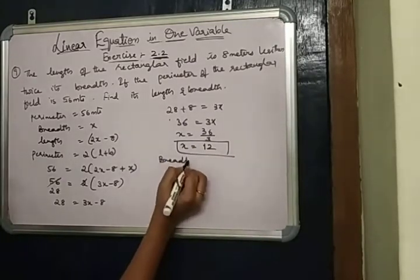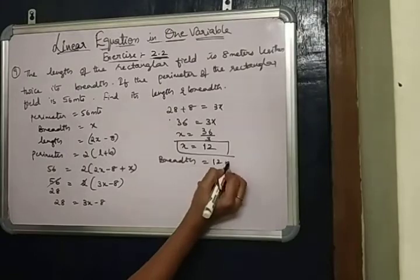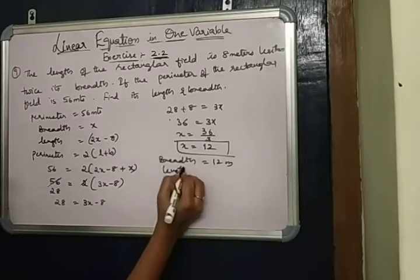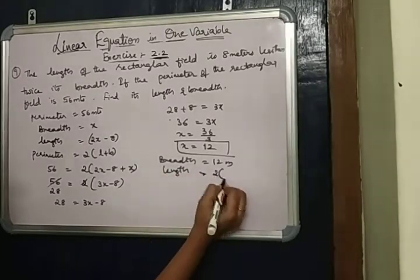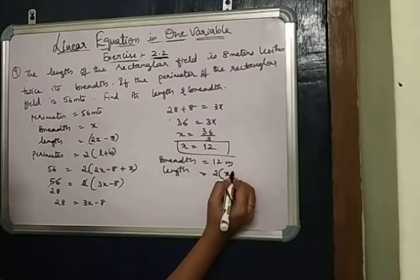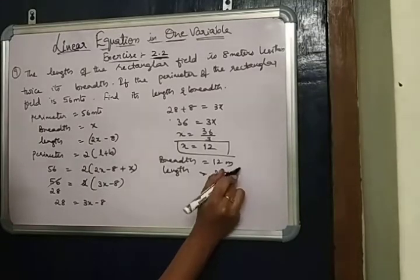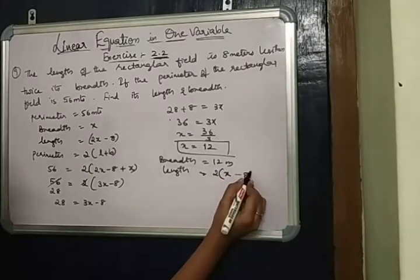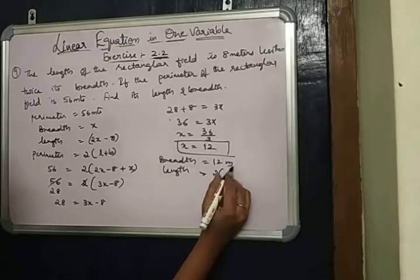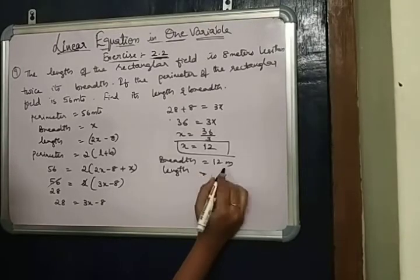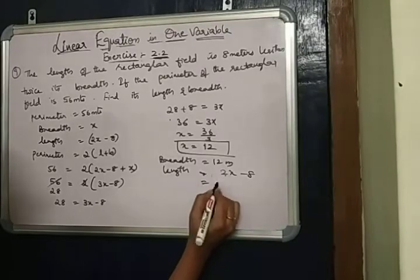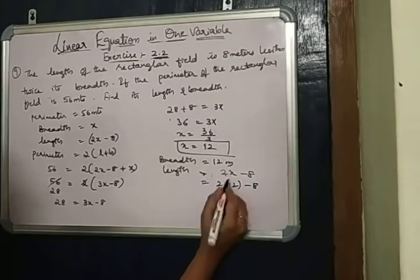Therefore breadth is equal to 12 meters. Now for length, it's 2x minus 8. In the place of x, substitute 12.